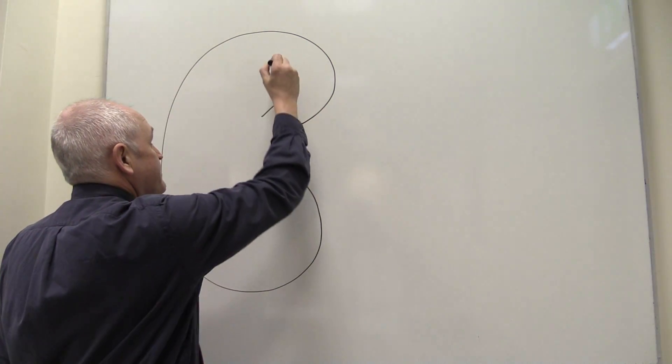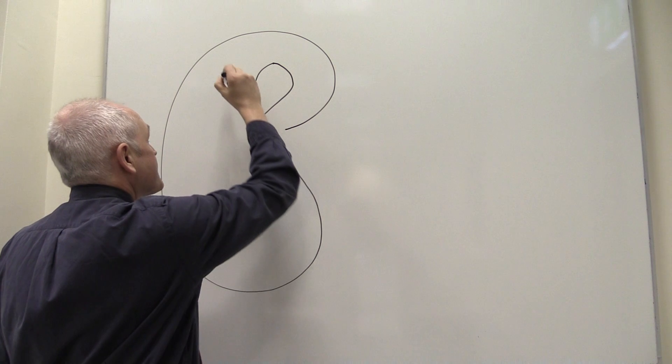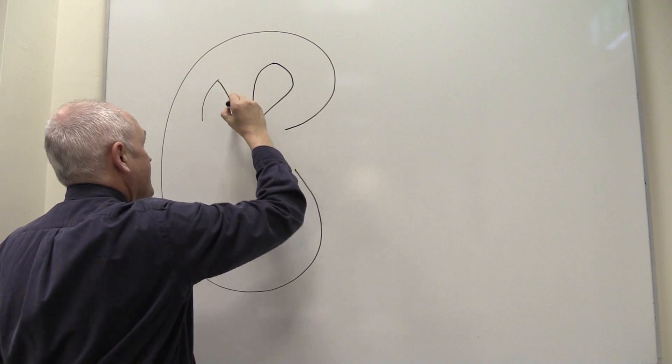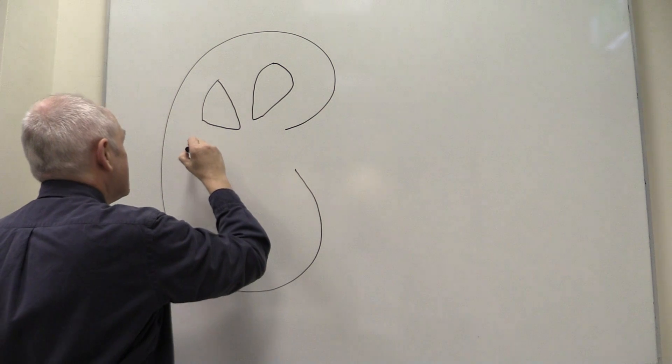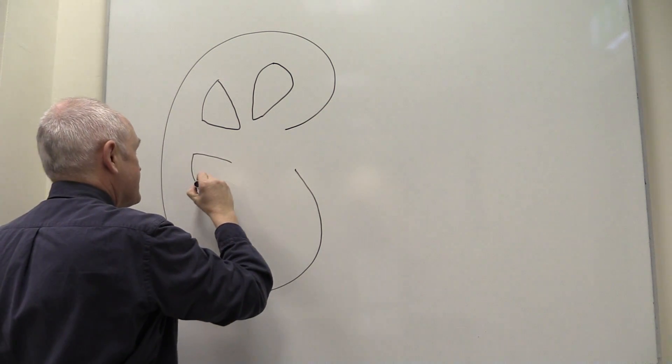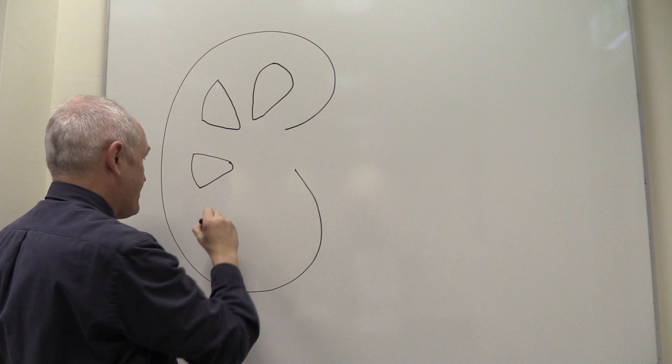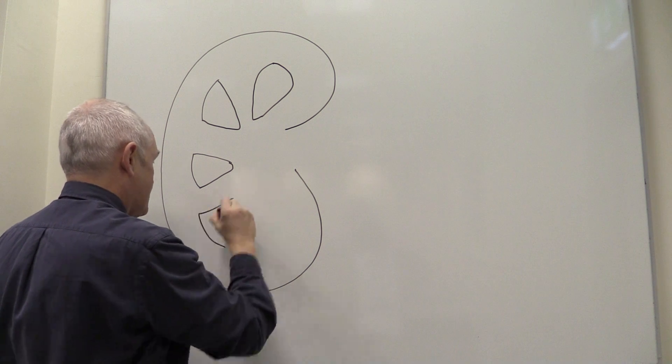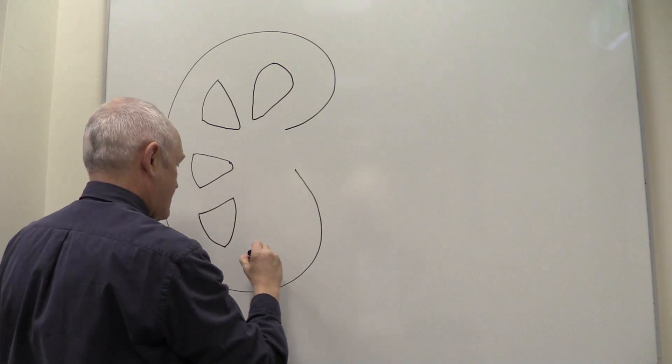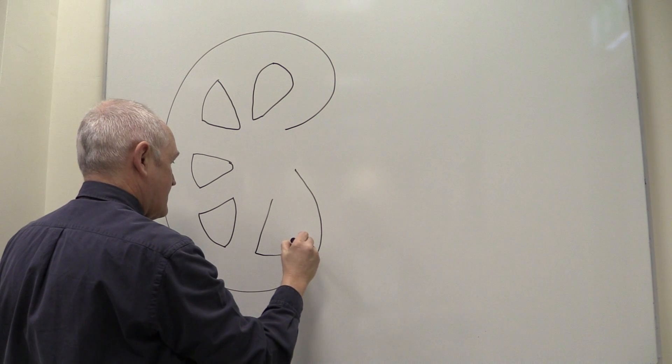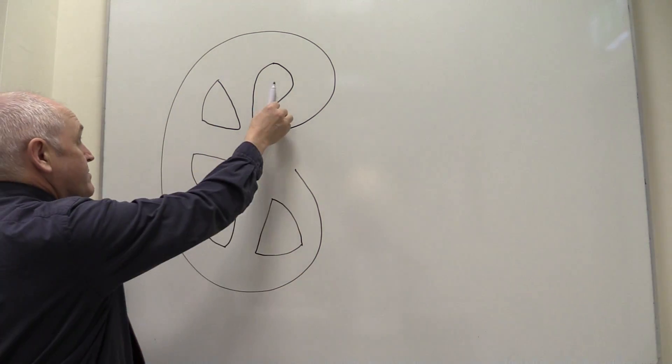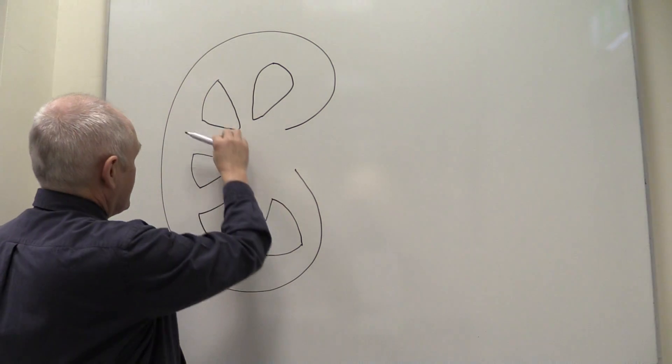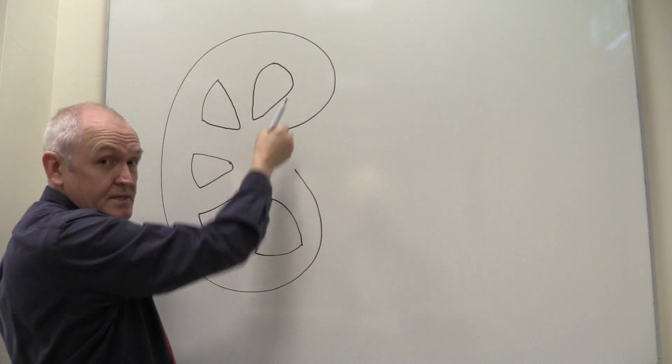So here we have some medullary pyramids - pyramidal, triangular-shaped structures. Three-dimensionally they look like a pyramid. So we have the cortex on the outside, the medullary pyramids, and the cortical columns between the pyramids.